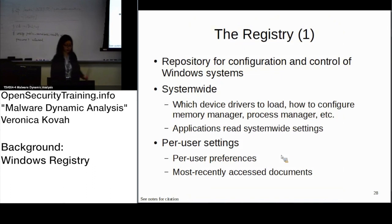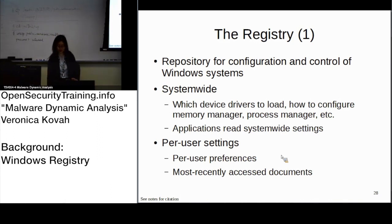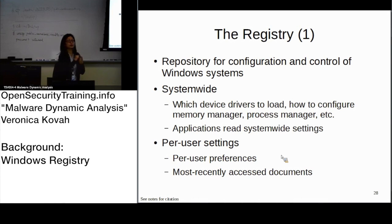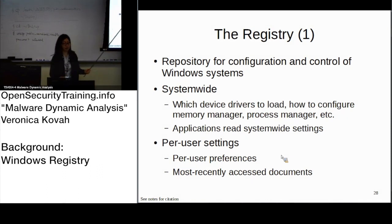In the registry, there are two types of keys. One is system-wide — if you modify one registry key that is system-wide, it affects all users on the system. So if there are multiple users, changing one system-wide registry key changes things for everyone and the system itself.